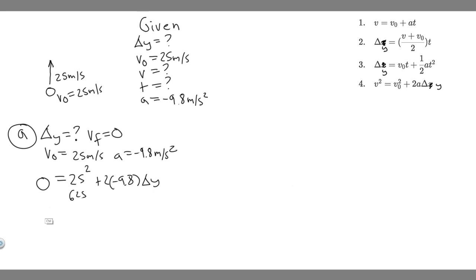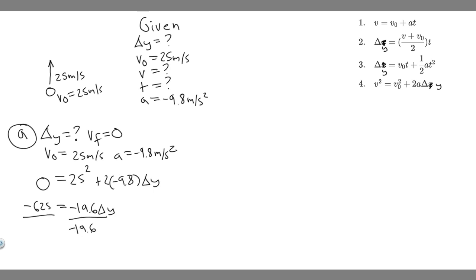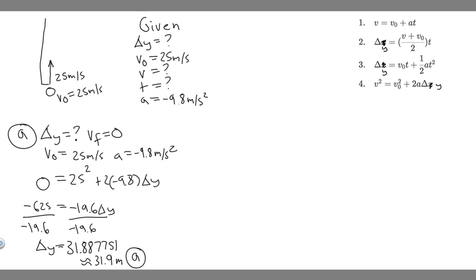So minus 625 equals 2 times minus 9.8, which is minus 19.6, times delta Y. Divide both sides by minus 19.6 — and notice the result is positive, which makes sense because delta Y has to be positive since it's going up. So it's going to be 31.8877, which I'll round to 31.9 meters. That's how high it rises — 31.9 meters.